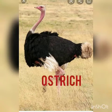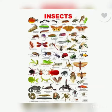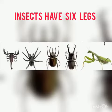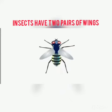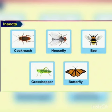Insects are small animals. All insects have six legs. They usually have two pairs of wings. For example: cockroach, housefly, bee, grasshopper, butterfly.